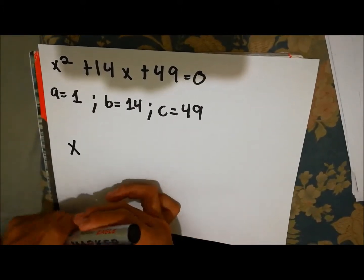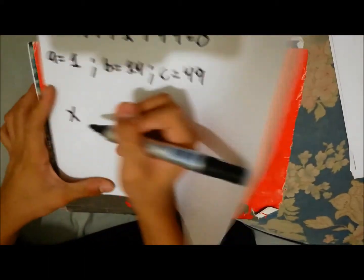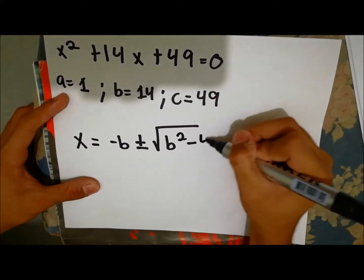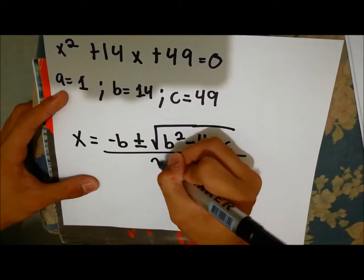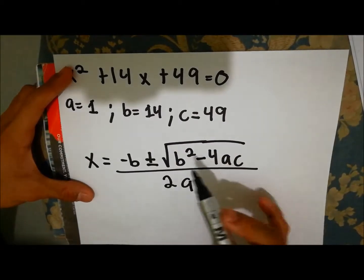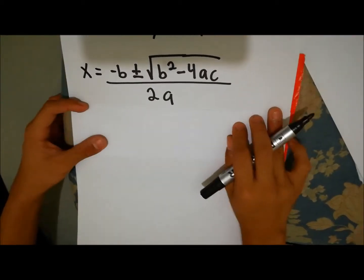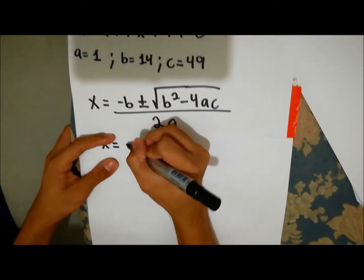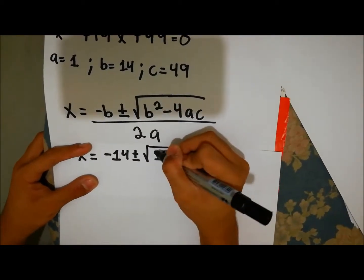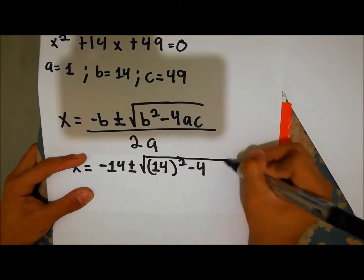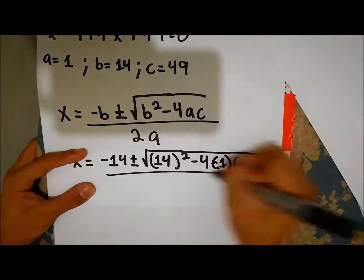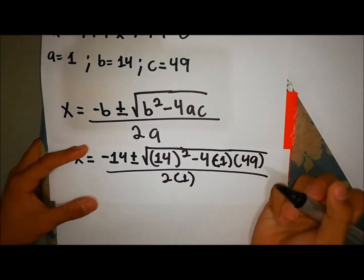Let us first familiarize the quadratic formula. The quadratic formula is: x equals negative b plus or minus the square root of b squared minus 4ac, over 2a. We must substitute a, b, and c into the formula. We substitute: x equals negative 14 plus or minus the square root of 14 squared minus 4ac, over 2a.